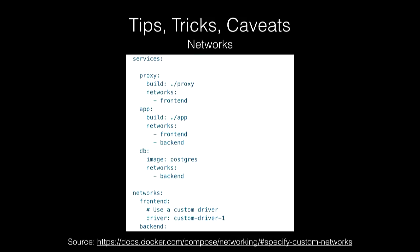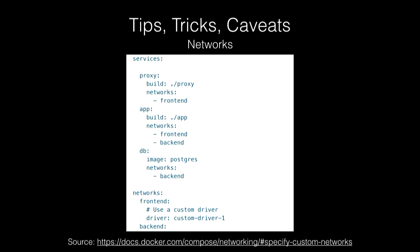Networks are important to understand. You can see from the official documentation example: a proxy is inside a front-end network, an app is in both a front-end and back-end network, and a database is in a back-end network only. The intent is clear — our proxy container cannot reach our database container. If it tries to use the hostname DB, it's going to get no results.